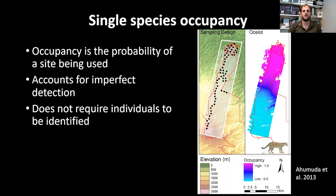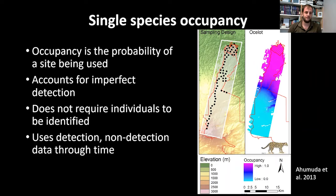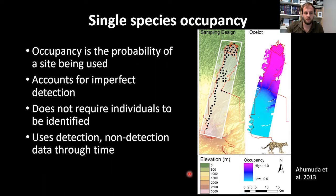A significant benefit of occupancy modeling is that, unlike spatial mark-recapture, it does not require individual animals to be identifiable. It uses detection/non-detection data through time: one if the species was detected, zero if not detected, or NA if the camera wasn't functioning due to SD card or battery failure.